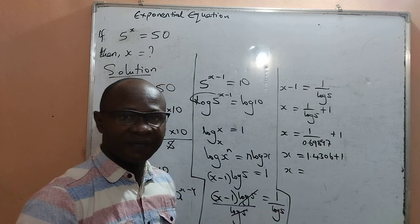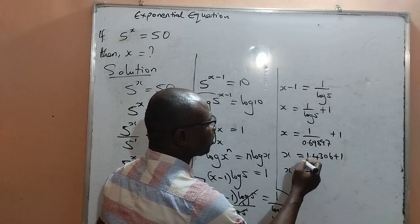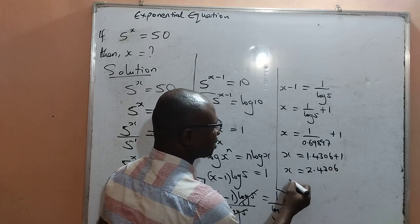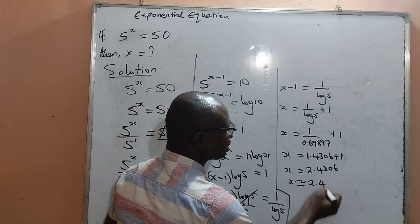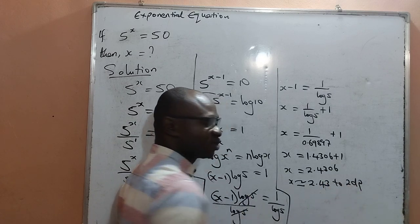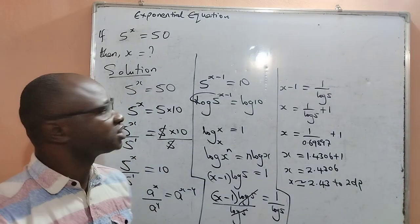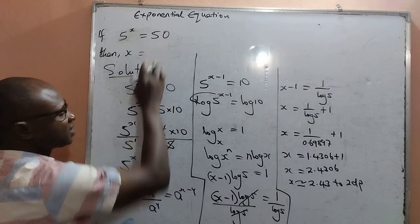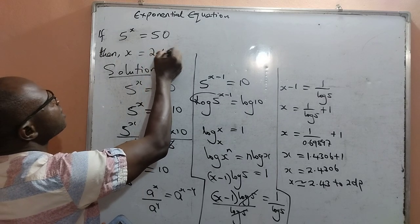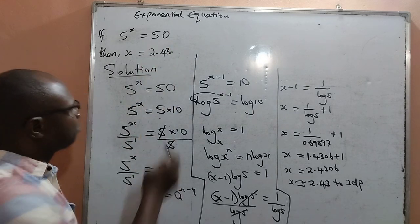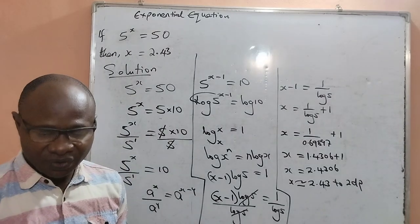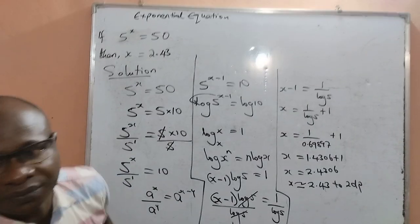This means that the final value of x is equal to 1 plus 1.4306, which is 2.4306, which can be written as 2.43 to two decimal places. Thank you dear friends for watching to the end. The value of x for us is approximately 2.43. Please kindly subscribe to my channel for more exciting videos. God bless you, bye.